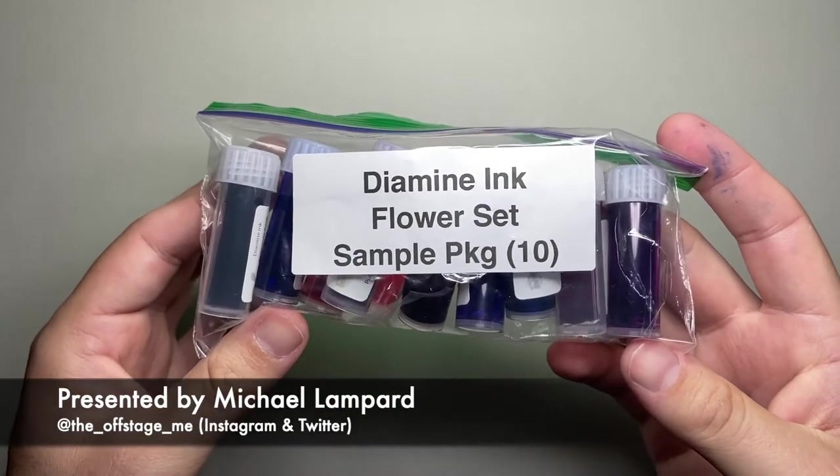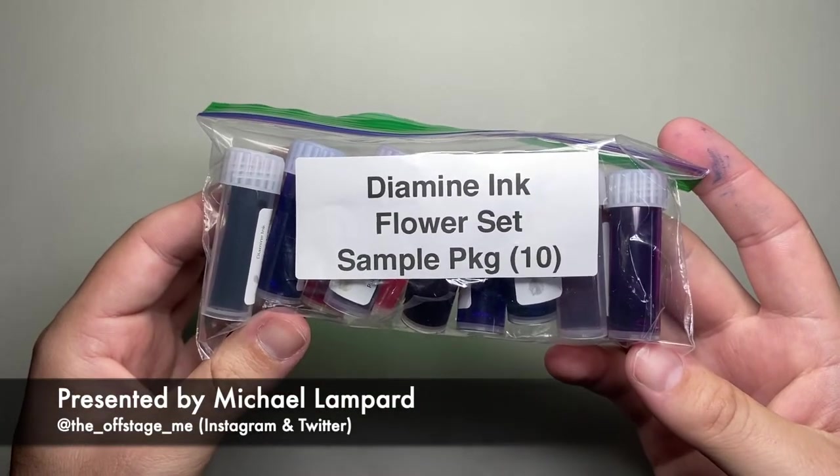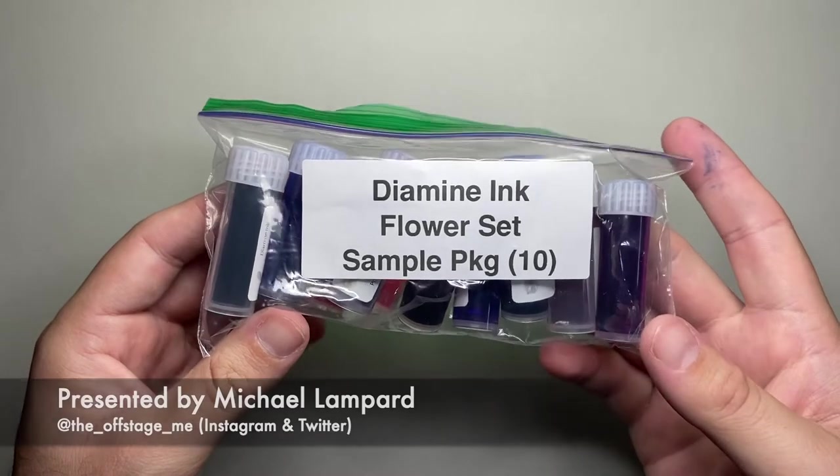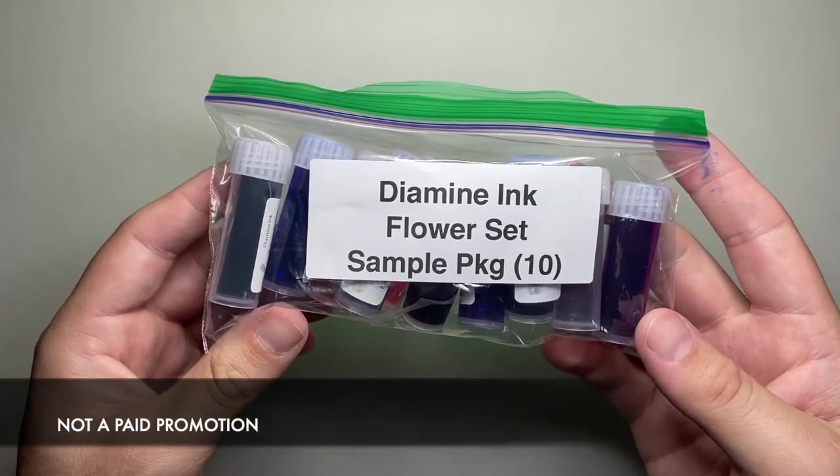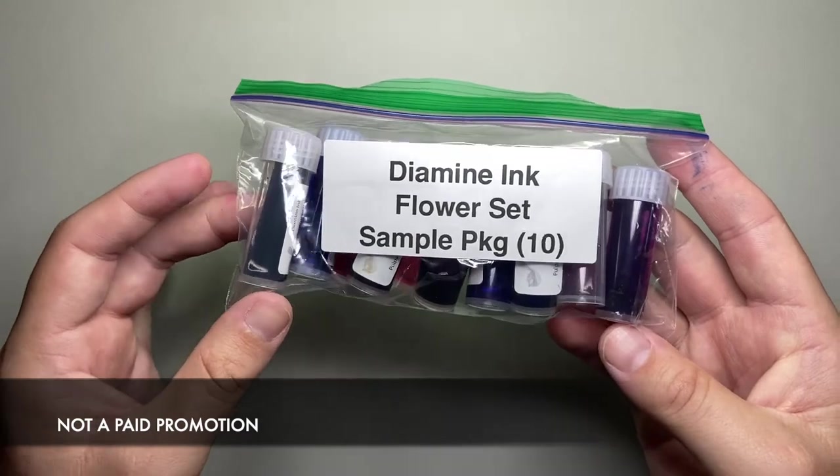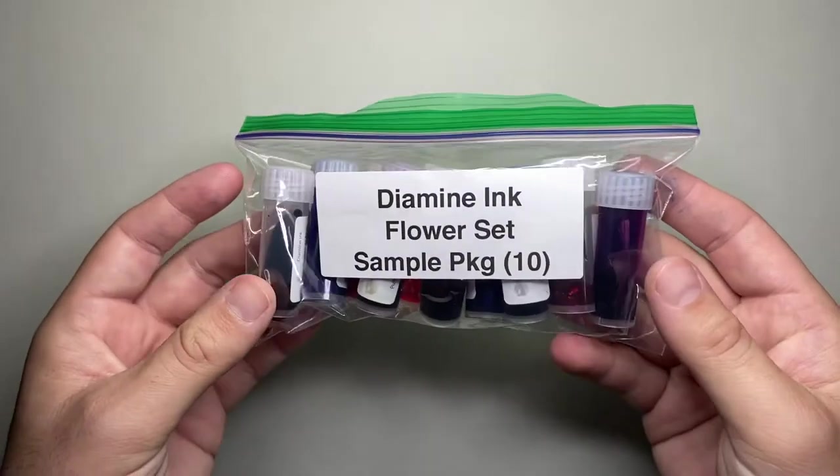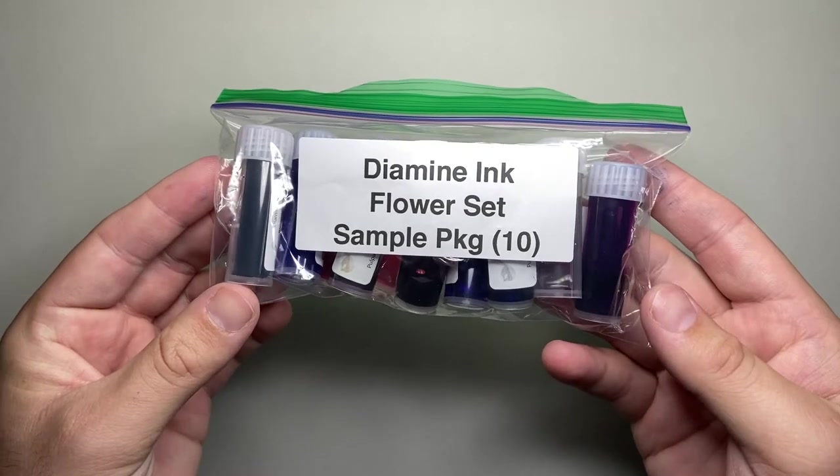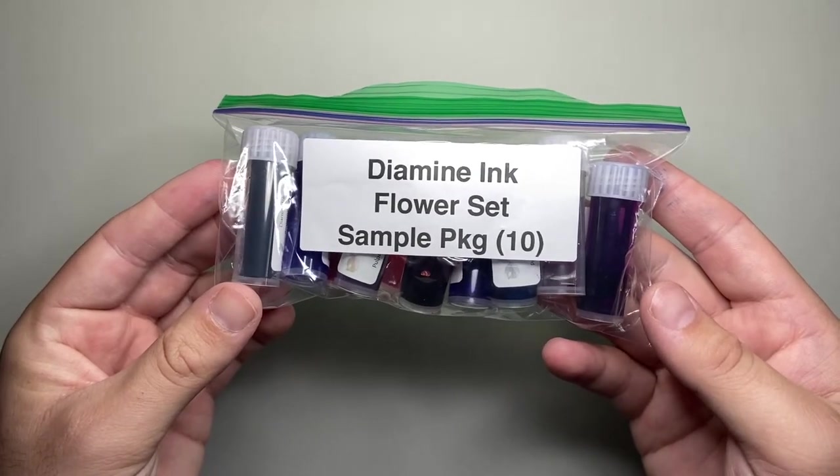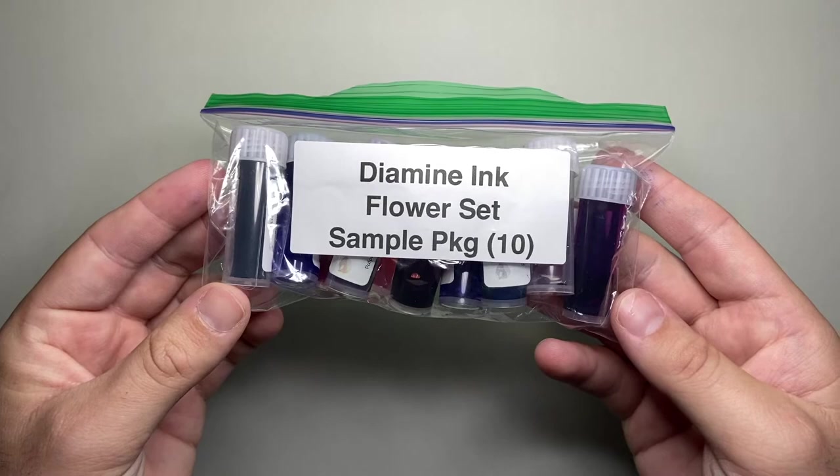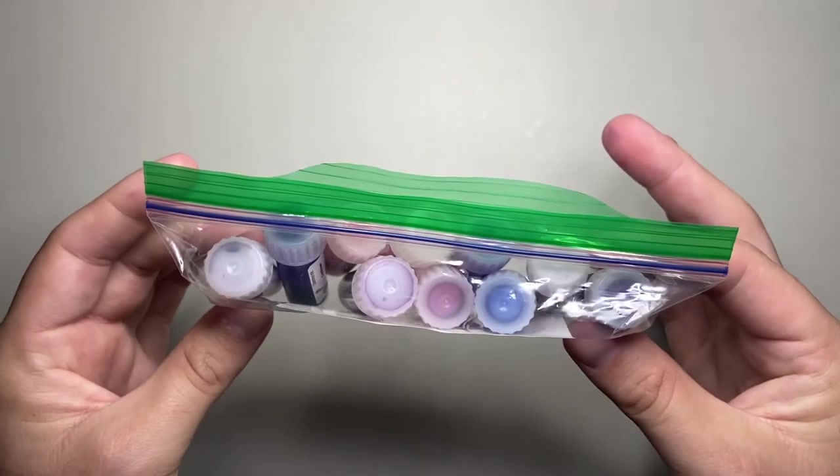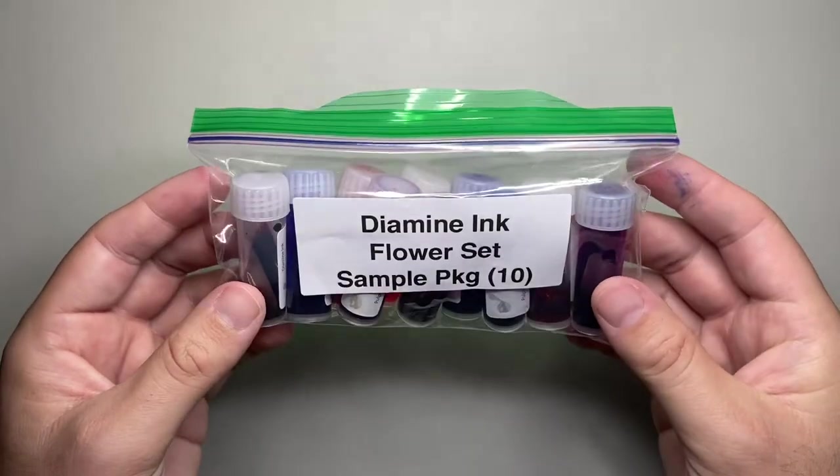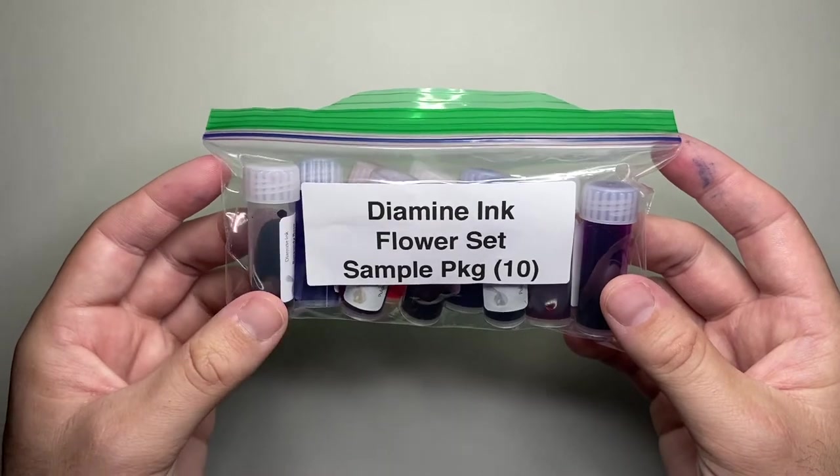Now this set does come as a box set of 10 30ml bottles of these inks, but Pulp Addiction have put them together into a little sample set here, taking a 2ml sample of each of the inks, so you can try it out at a more affordable way. There are 10 inks in the set as I said, 2ml sample vials.